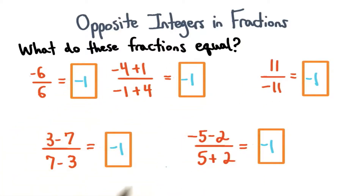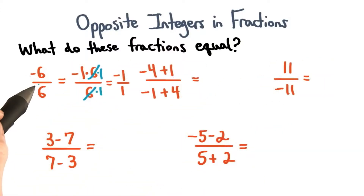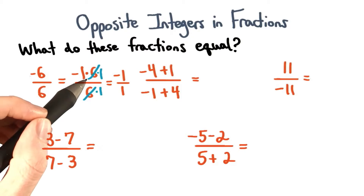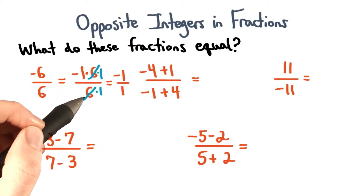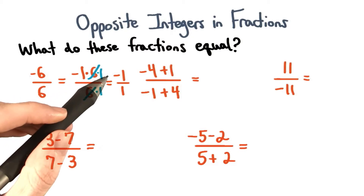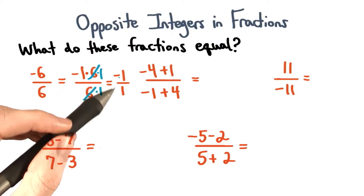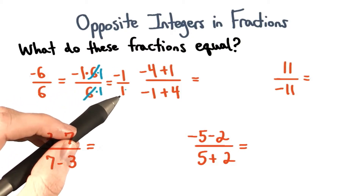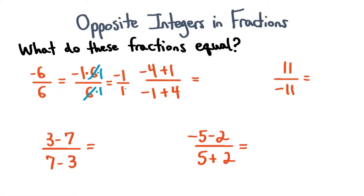Well, it turns out all of these are negative 1. For the first fraction, we can think about simplifying the common factor of 6, leaving us with negative 1 divided by 1, or just negative 1.